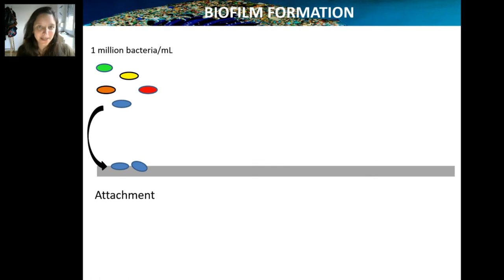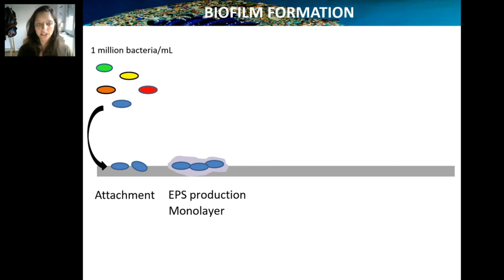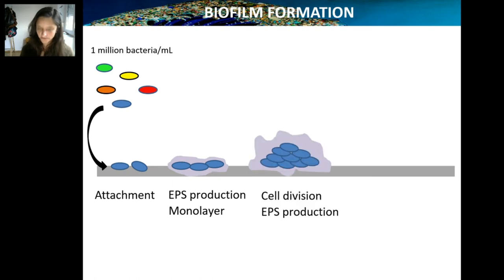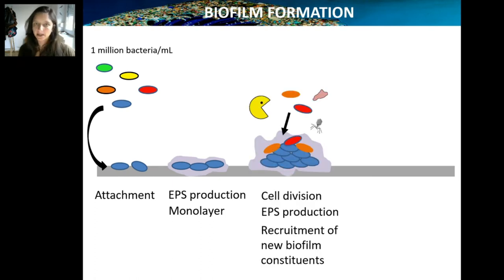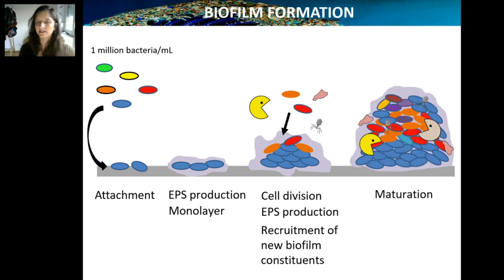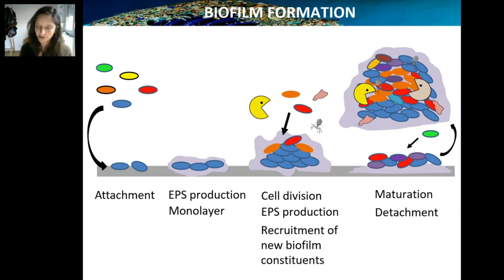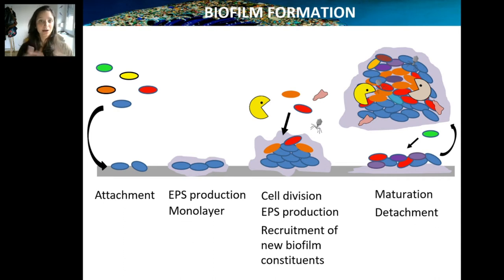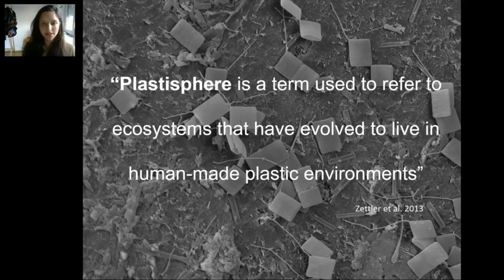Some of these 1 million bacteria per milliliter like to attach to the surface. Then they create the EPS — the glue that allows them to attach to each other and to the surface. They continue dividing, new players come in — predators, viruses, organic matter — and the biofilm continues developing. Sometimes organisms leave, sometimes whole chunks of the biofilm detach, and other organisms arrive. So while it is relatively stable compared to the surrounding seawater, it is still a habitat that changes over time depending on which stage of development it is in.